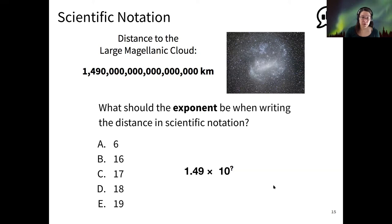Alright, most of you are choosing D, 18. That's exactly right. So remember that schoolhouse rock song: three, six, nine, twelve, fifteen, eighteen. Alright, so there's 18 decimal places here that you would have to move the decimal from being between the one and the four to being at the end of the number.